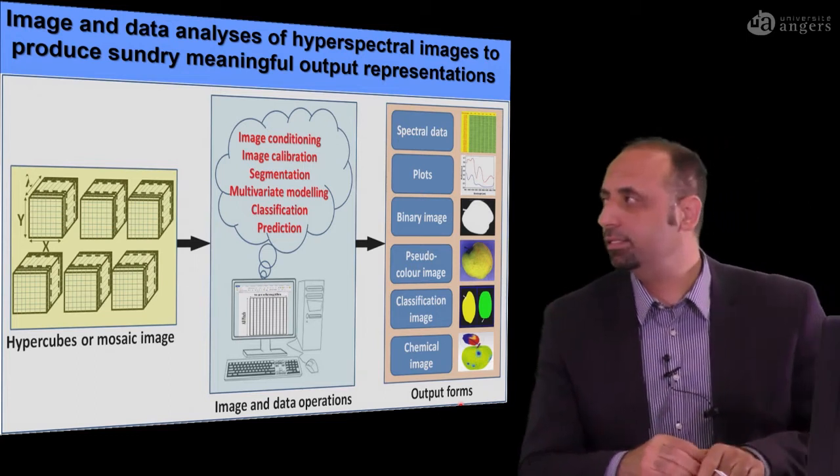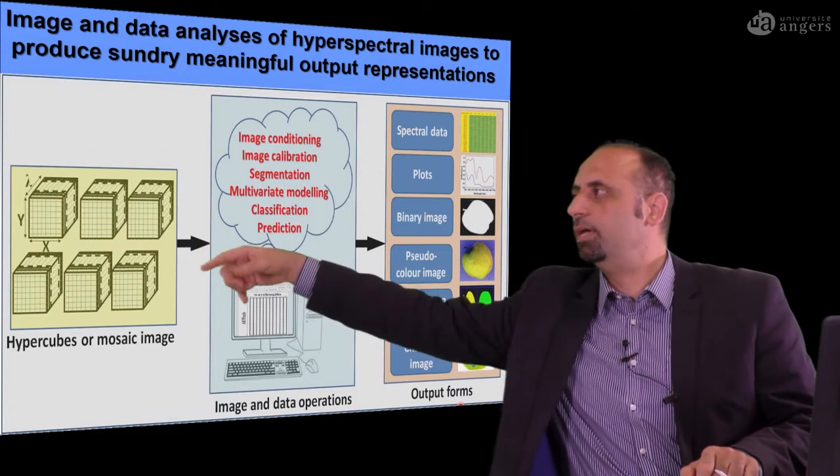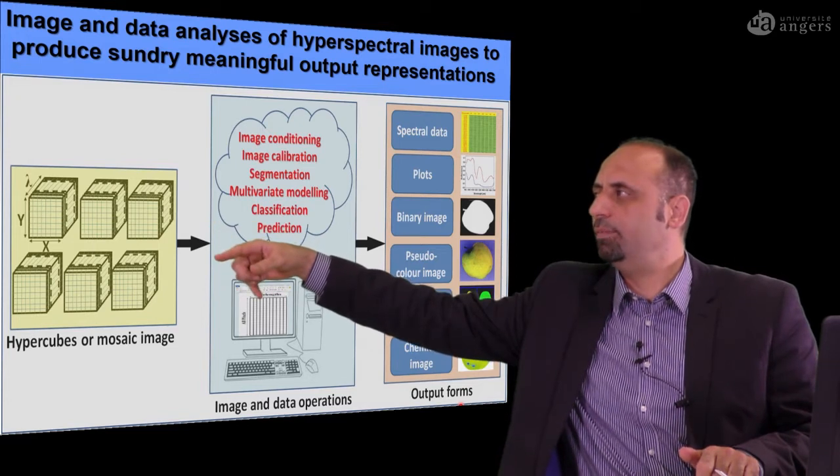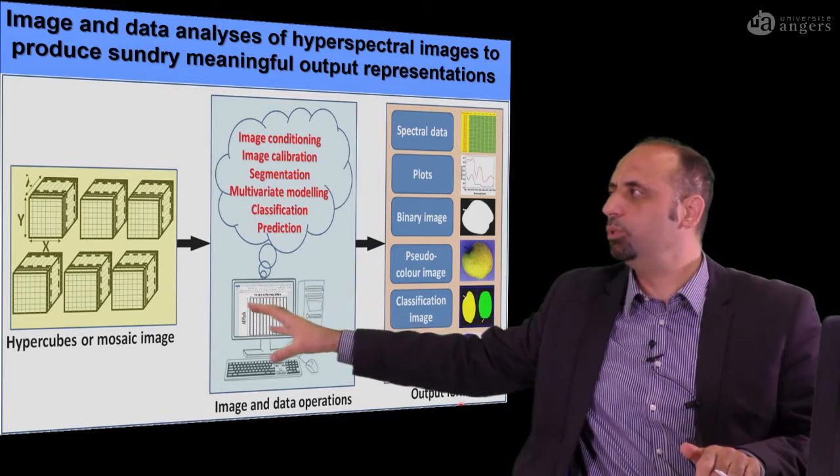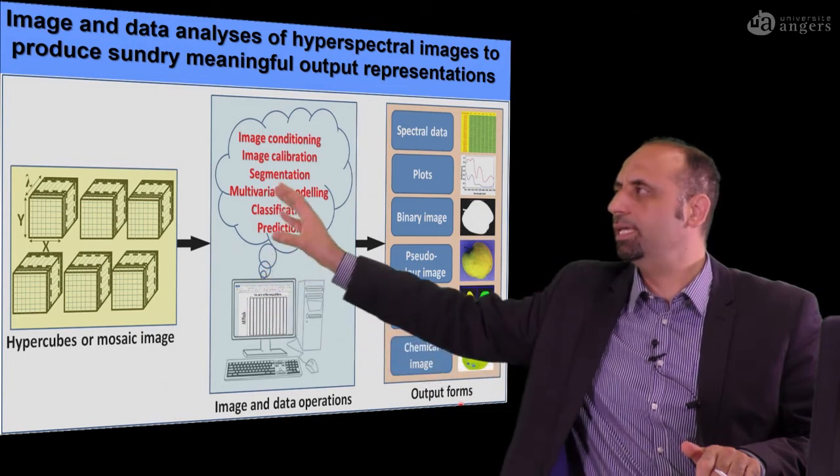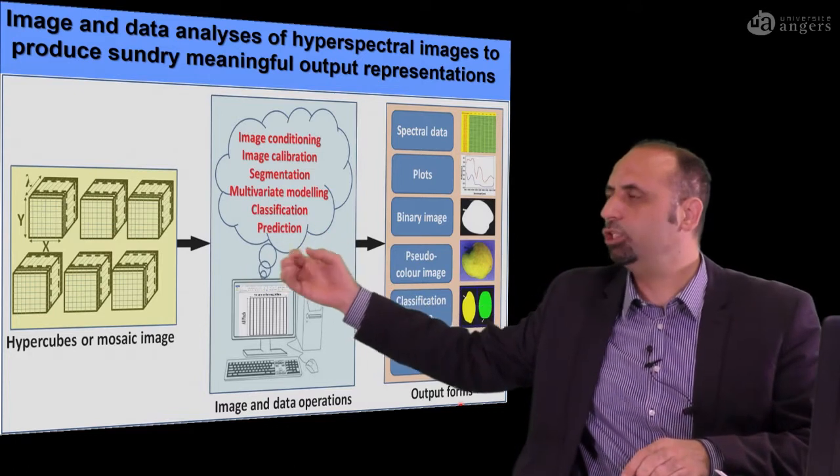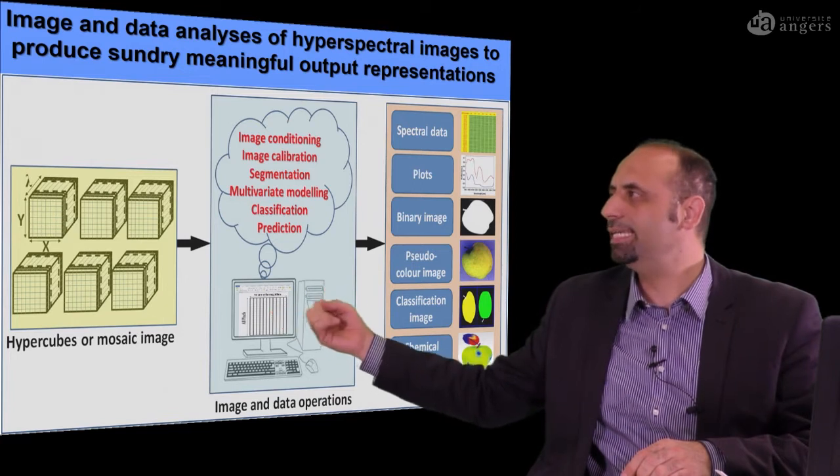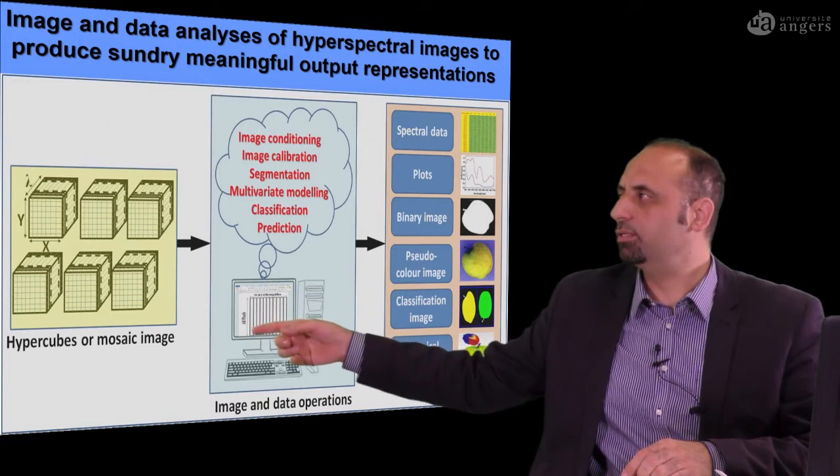So in this slide, you can see here we have different data cubes coming from different samples. After you acquire the image, you need to extract data, and this data needs to go to the computer. From the computer, you can think about different scenarios. You need to do image preprocessing, calibration, segmentation, develop multivariate modeling, and perform classification and prediction. All of this should be carried out in the computer.